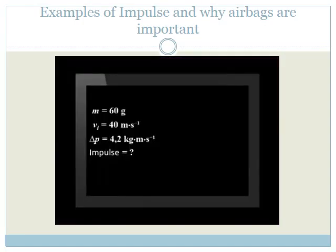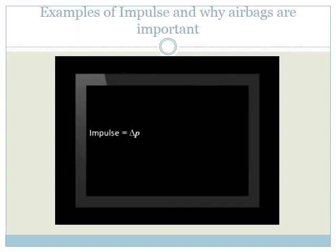Here is the information we have. We need to find the magnitude of the impulse exerted by the wall on the ball. Remember, impulse equals change in momentum, and change in momentum is given as 4.2 kilogram meters per second. Therefore, impulse equals 4.2 kilogram meters per second.